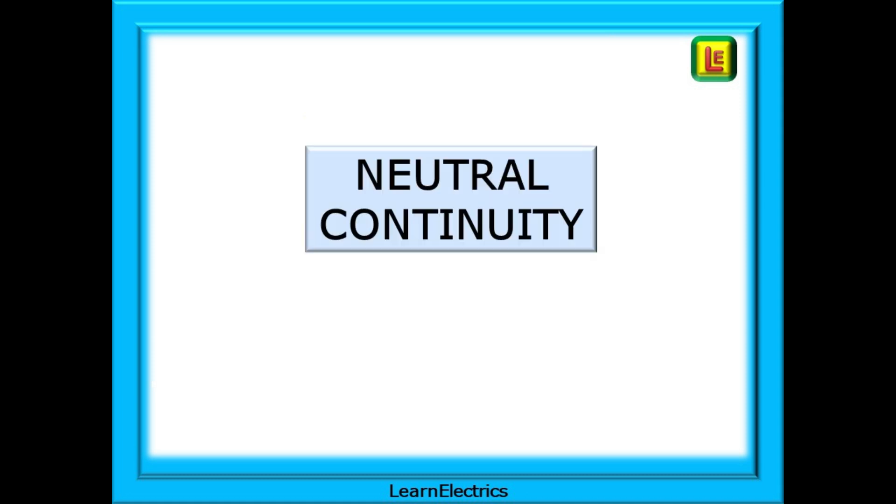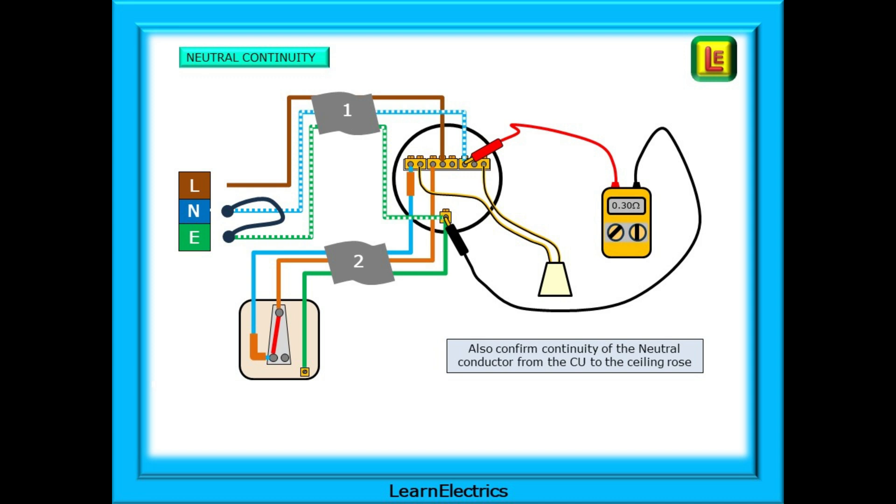And now it's the turn of the neutral. Testing neutral continuity from the consumer unit to the ceiling rows. Reposition the link at the consumer unit to connect the earth conductor to the neutral conductor. Then test on low ohms between the earth terminal and the neutral block both at the ceiling rows. This will test along cable number one. If you have a high reading, OL for instance, check that you've actually changed the position of the link.